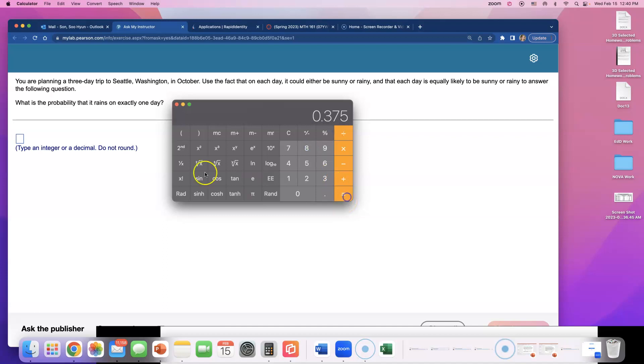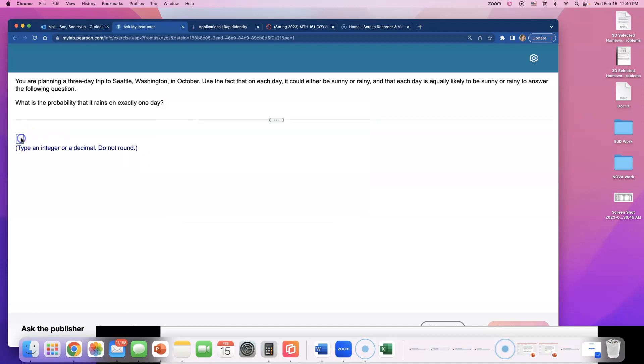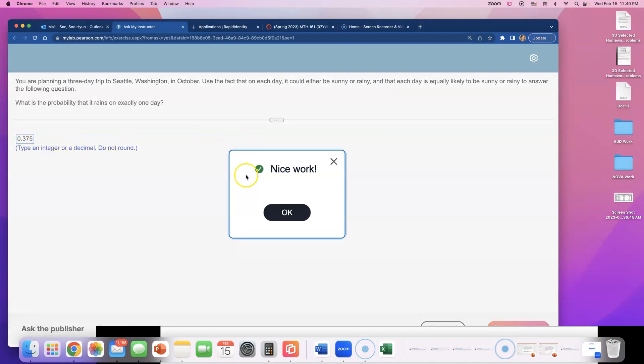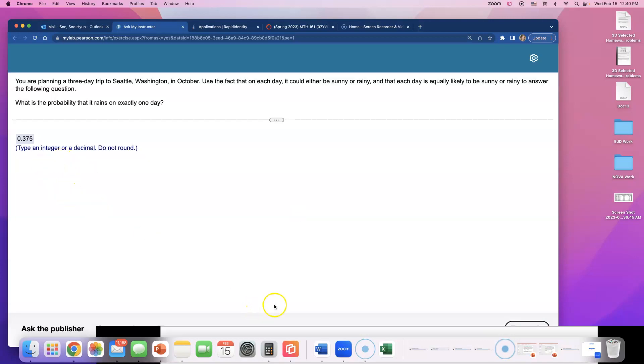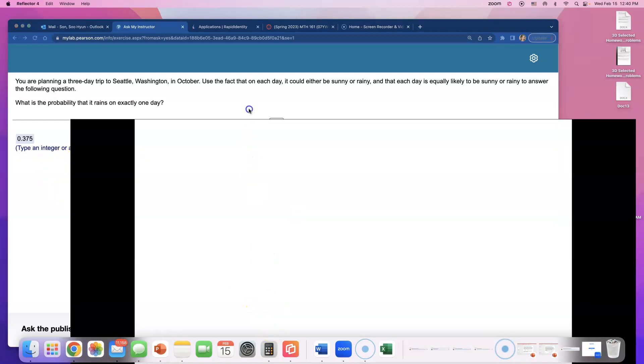I think it's going to be 3 out of 8, so 0.375. Let me type this in and see if this is correct. If it is correct, I'll explain why. Okay, so yes, the answer is this, but why, right?